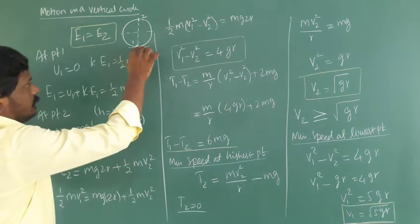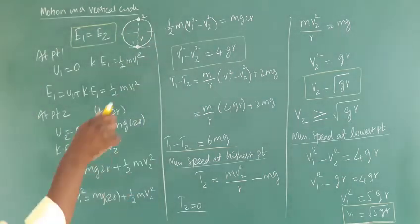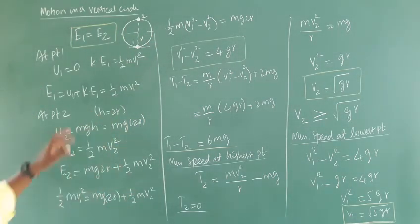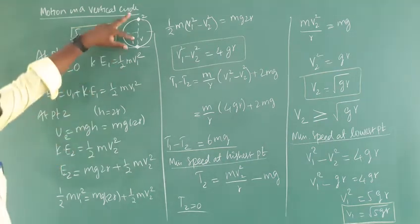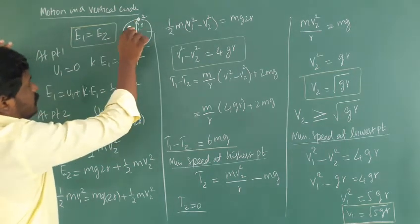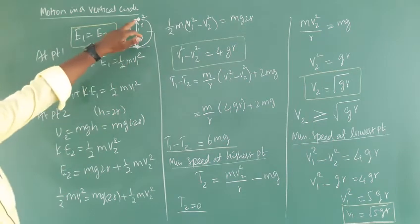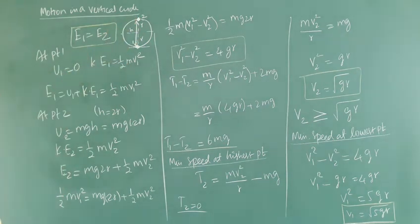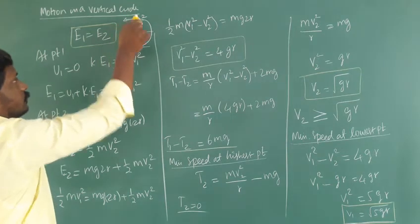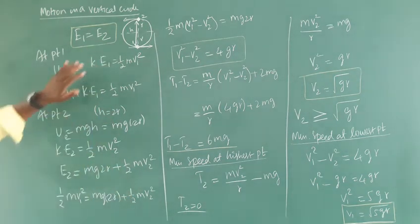At point 2, the highest point, the object is lifted to a height h, which is the radius r of the circular path we are rotating in. The potential energy at point 2 is equal to M G h, and since h equals 2r, the potential energy is M G times 2r. The kinetic energy is half M V2 squared, so the total energy at the highest point is M G 2r plus half M V2 squared.